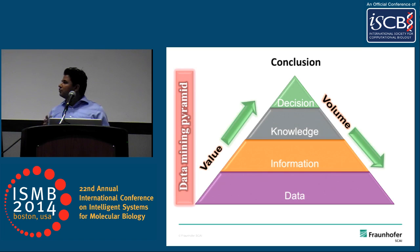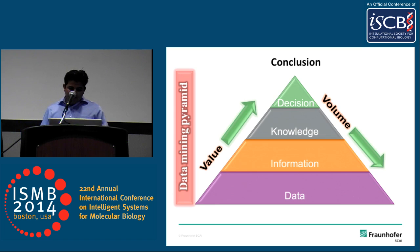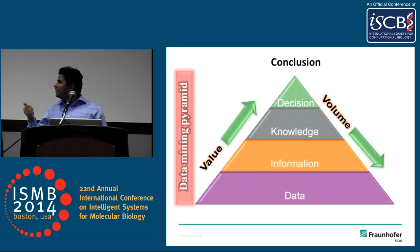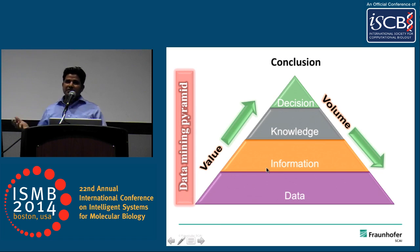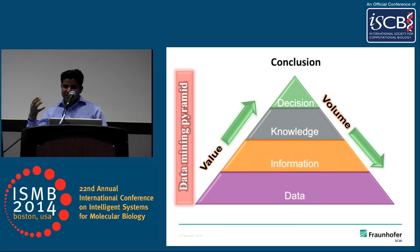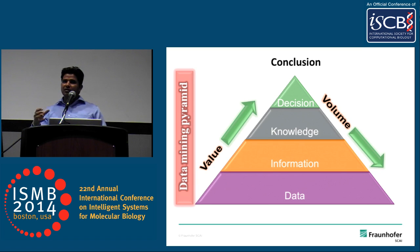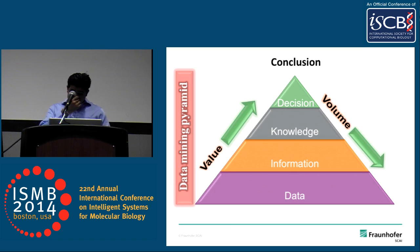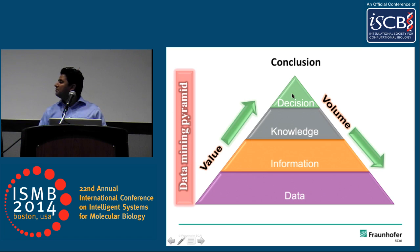Since I started with data, I will also conclude with the data mining pyramid. This pyramid has four levels: data, information, knowledge, and decision. Going up increases value; going down increases volume. In this study, we started with publication data, derived information using the AD ontology and Hypothesis Finder, converted that information into knowledge by constructing stage-specific networks, and arrived at a decision after filtering candidates for biomarkers. This should be the goal of every computational biologist — increasing value. As they say, it's always easier to go down the hill than to climb up, but the view is always better at the top.